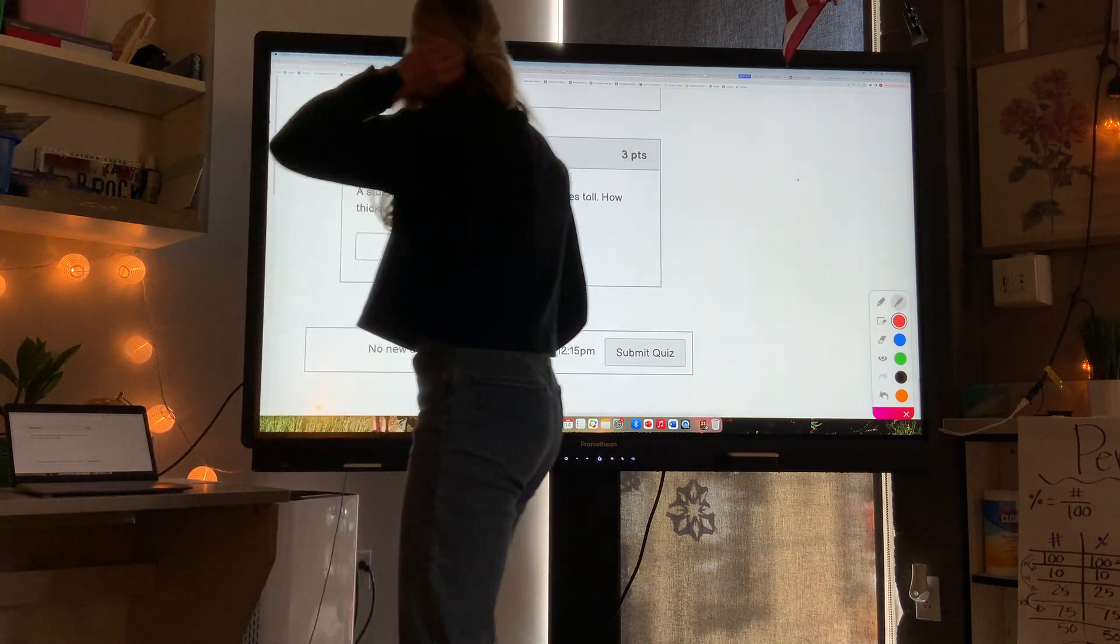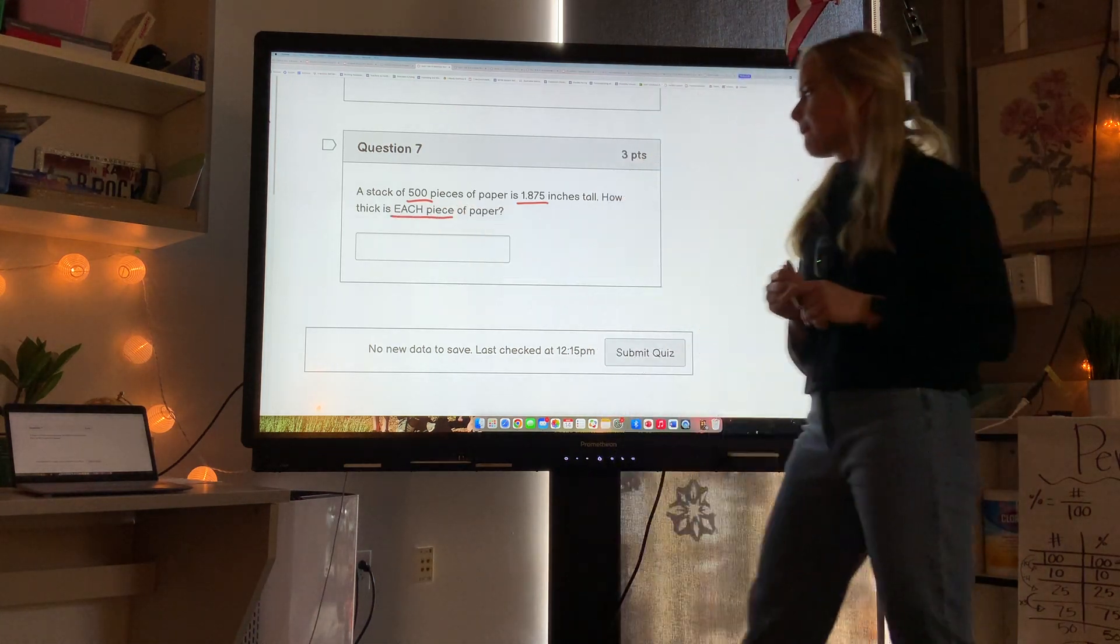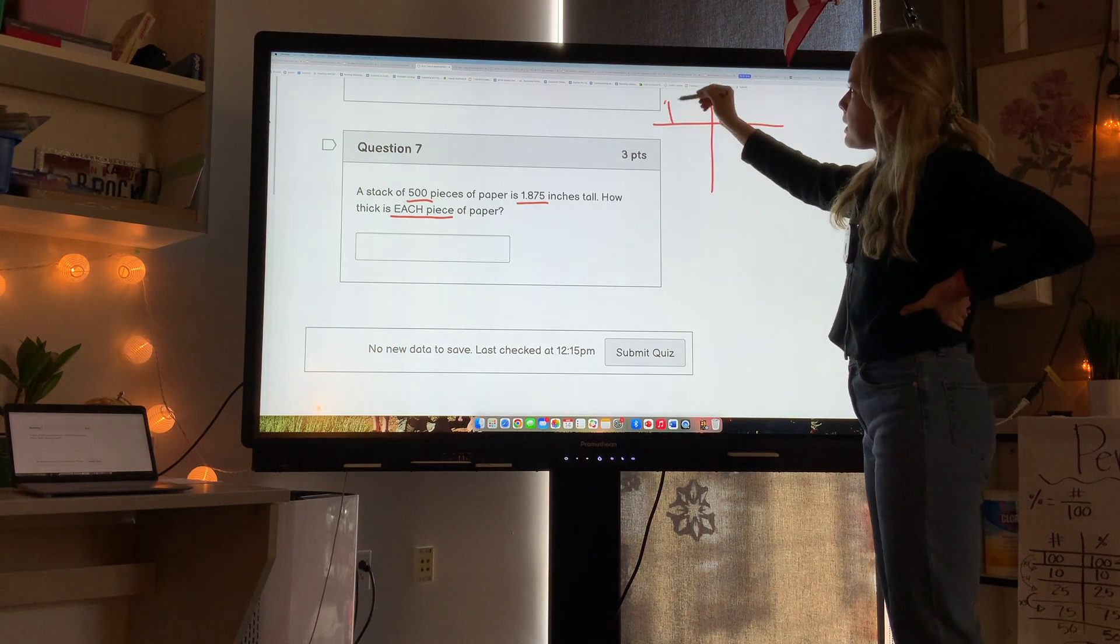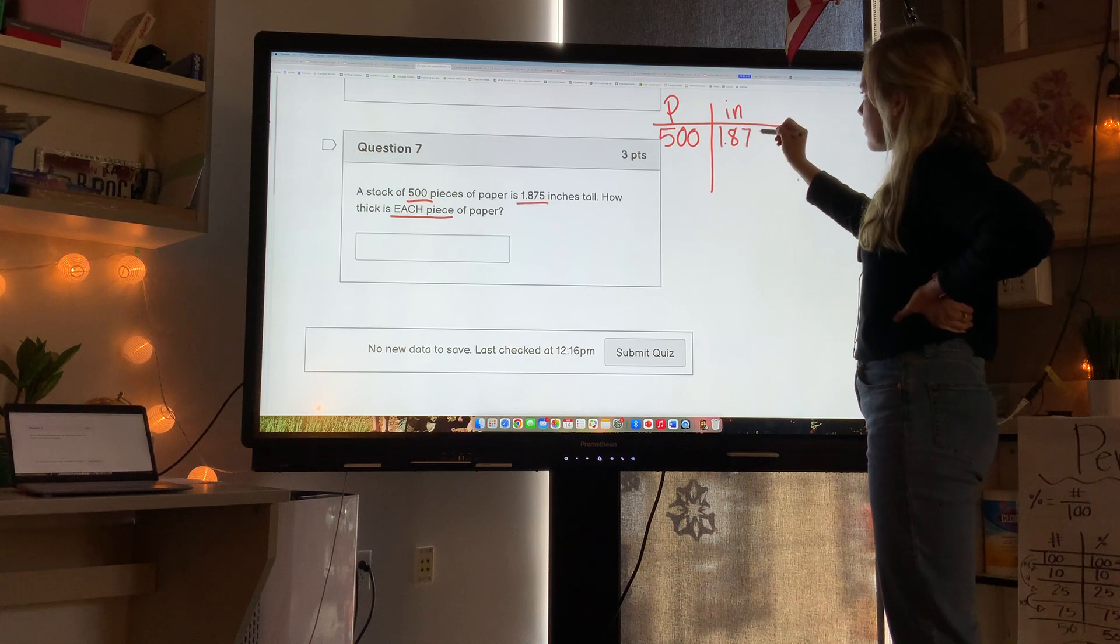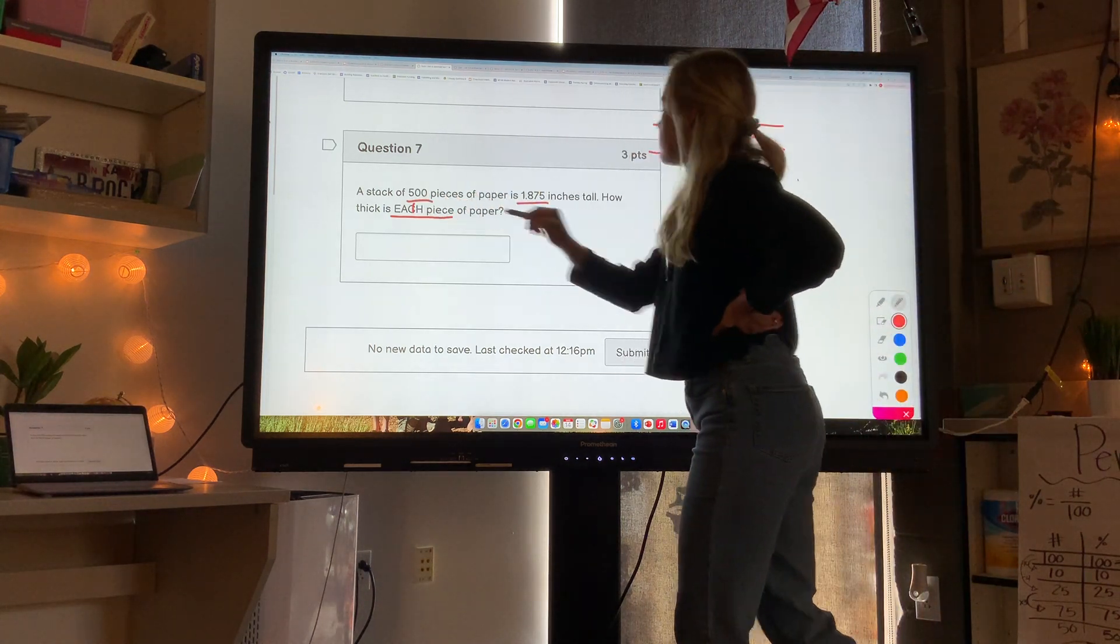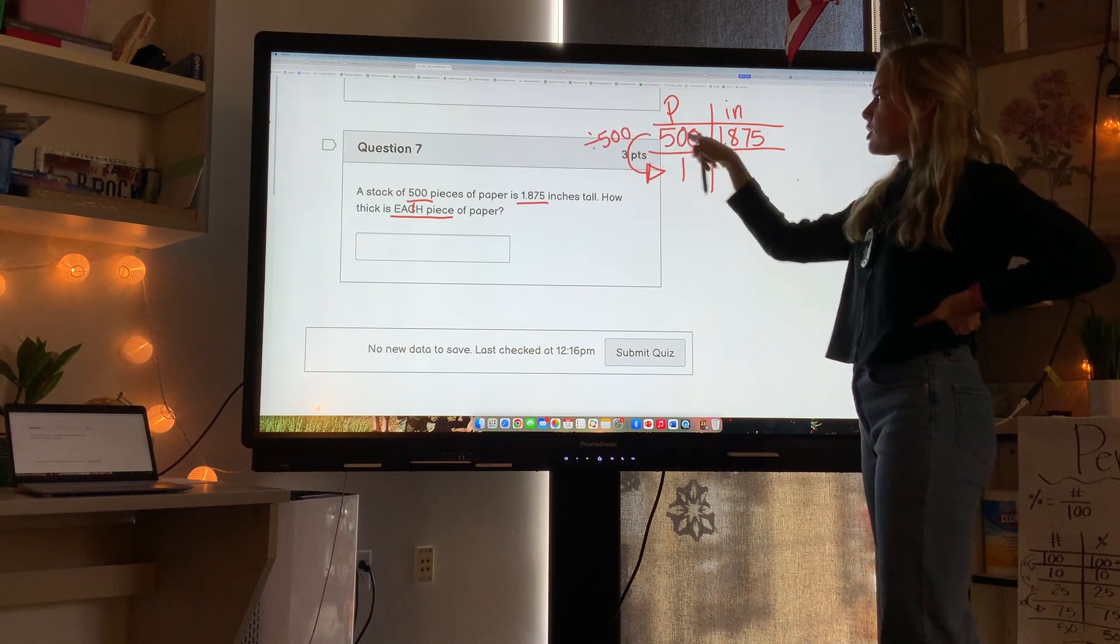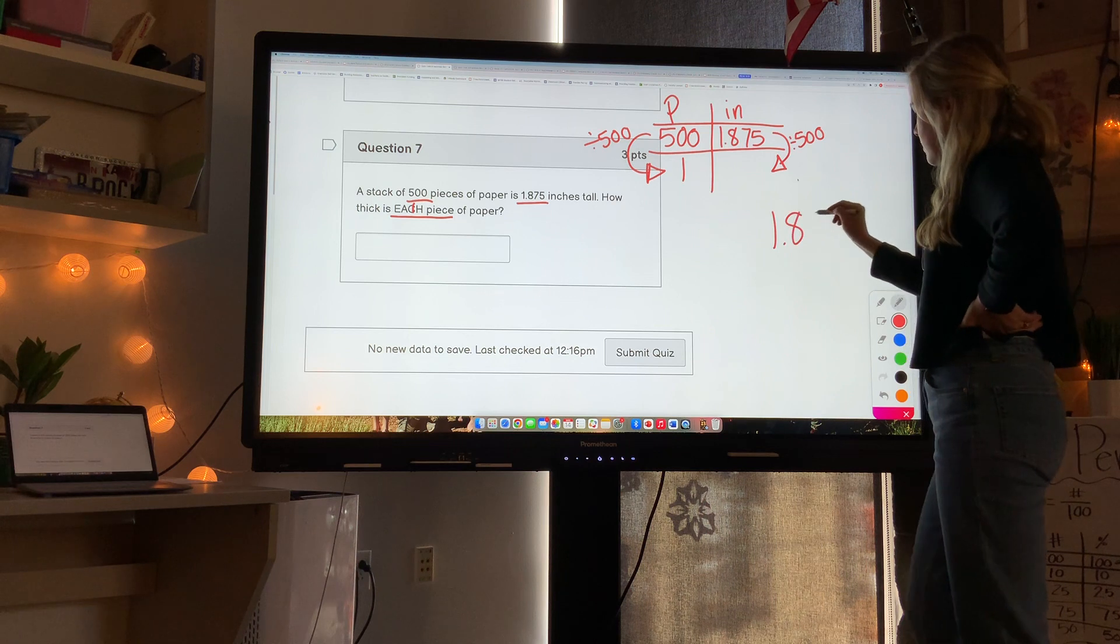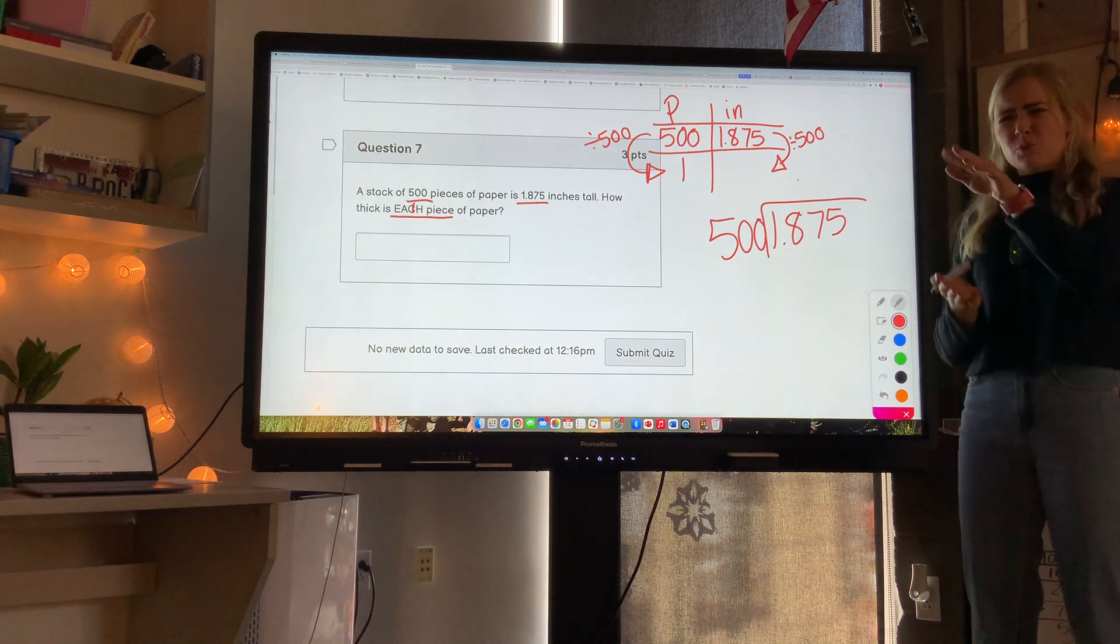That was a long one. So last one. A stack of 500 pieces of paper is 1.875 inches tall. Let's do a table for this one just in case we get mixed up. So we have paper and we have inches. We know 500 pieces of paper is 1.875 inches tall, and we're trying to find out how thick is each piece of paper. Each means one. So how much is one? I know I take 500 and divide it by 500 to find out how much 1 is. 500 divided by 500 is 1. So that means I'm going to divide 1.875 by 500. The order matters, so be careful on this one. We're trying to see how much is one tiny sheet of paper, so it's going to be a really small decimal number.